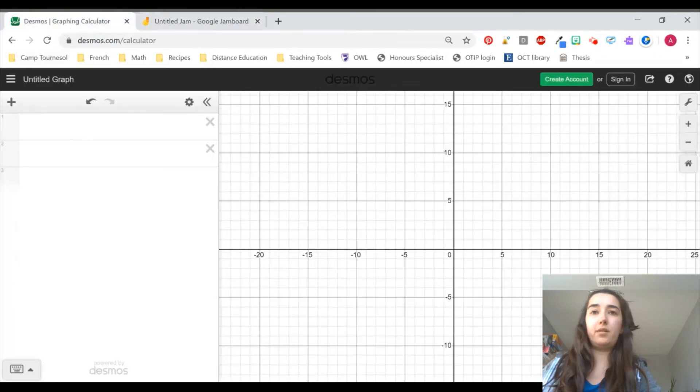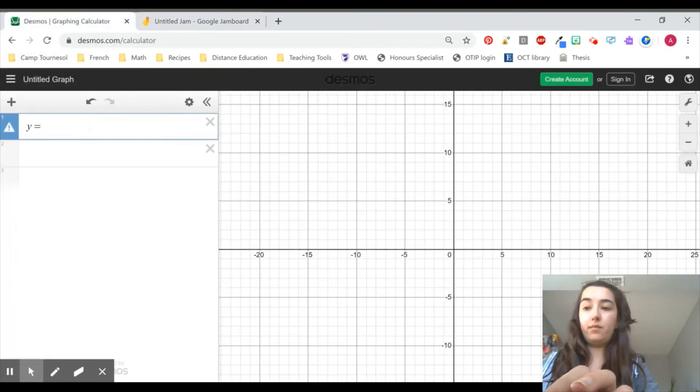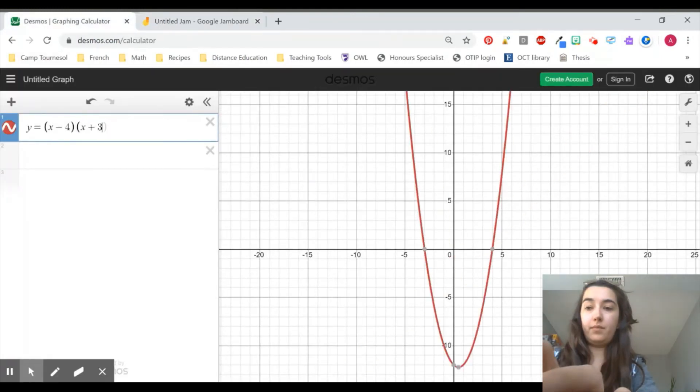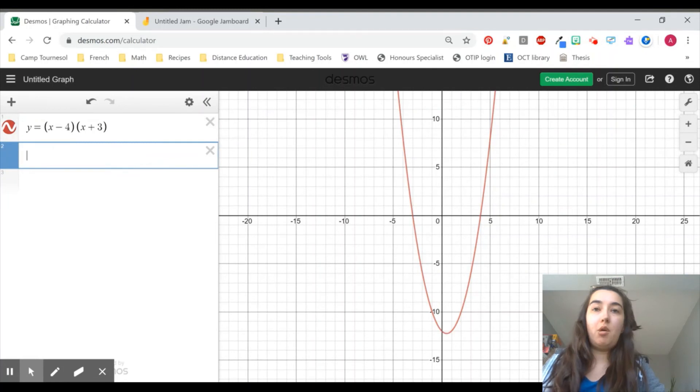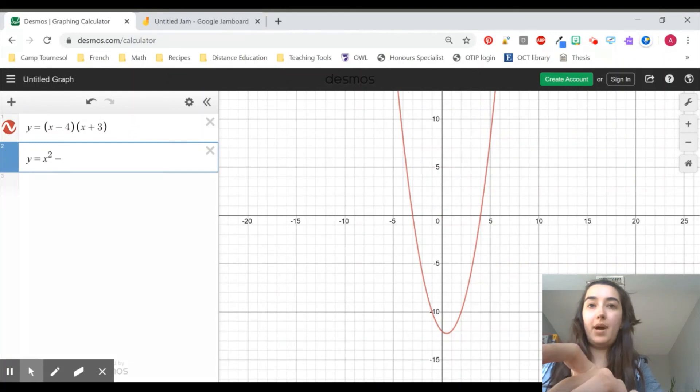Let's go ahead and graph and see what that looks like. Okay, we've got a pretty straightforward parabola here. Our x-intercepts are exactly where we want them to be. We've got a really nice vertex, a decent y-intercept as well. Let's go ahead and expand this. It's going to be y is equal to x squared minus x minus 12.